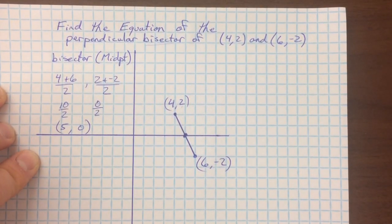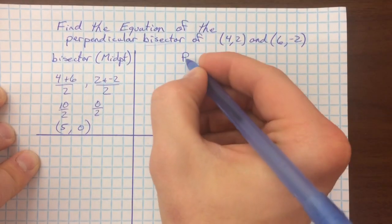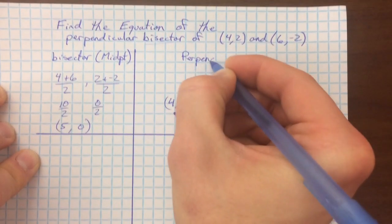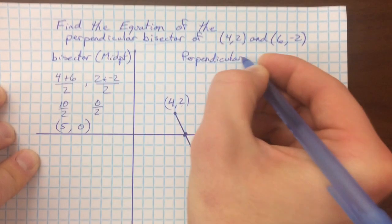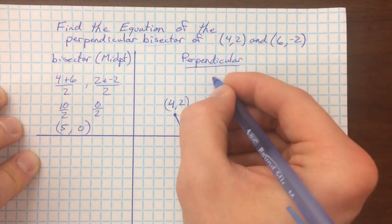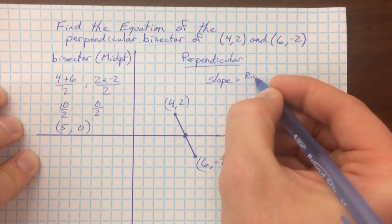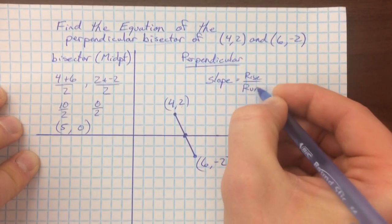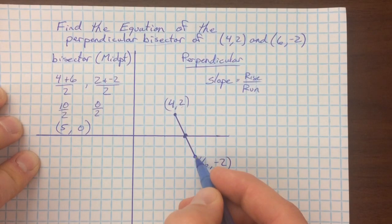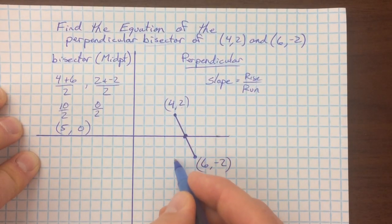Next thing we have to do is find the perpendicular part. Perpendicular is going to be involving the slopes. My current slope is my rise over run. I can do that visually fairly quickly. I've gone down 4 and over 2.